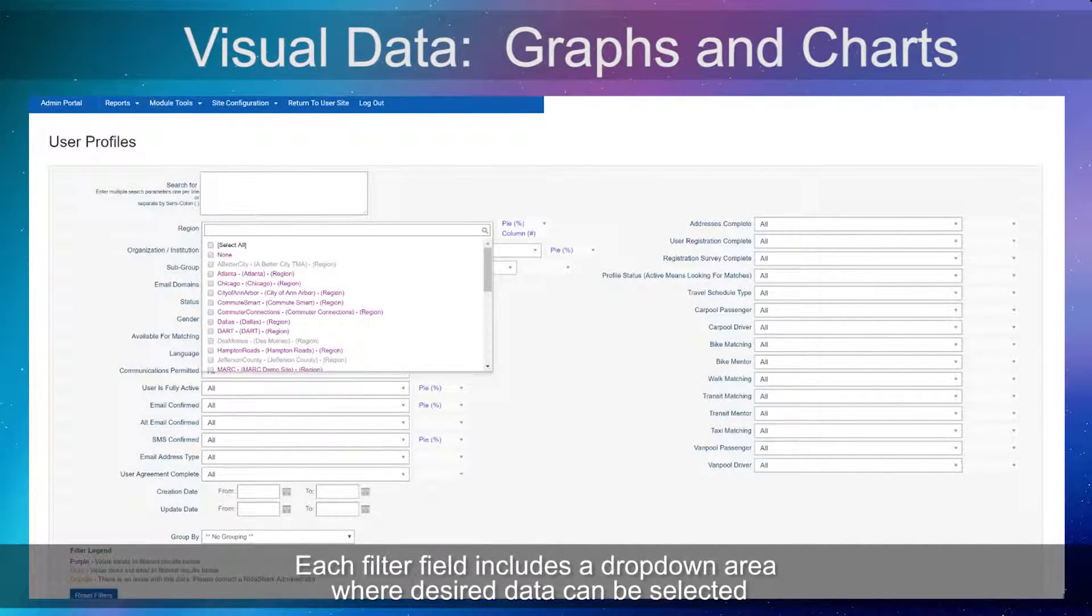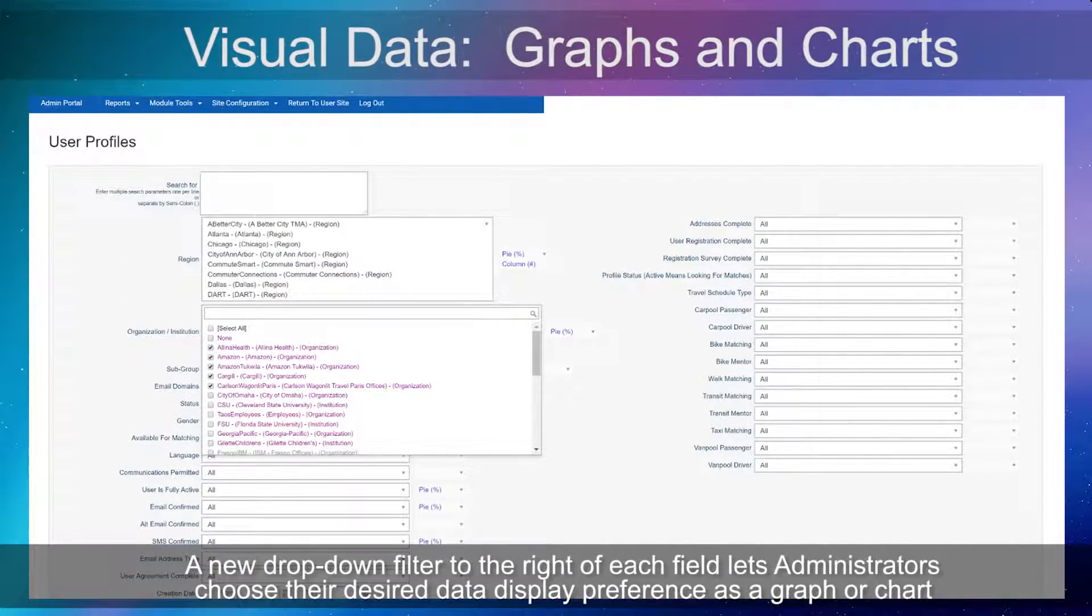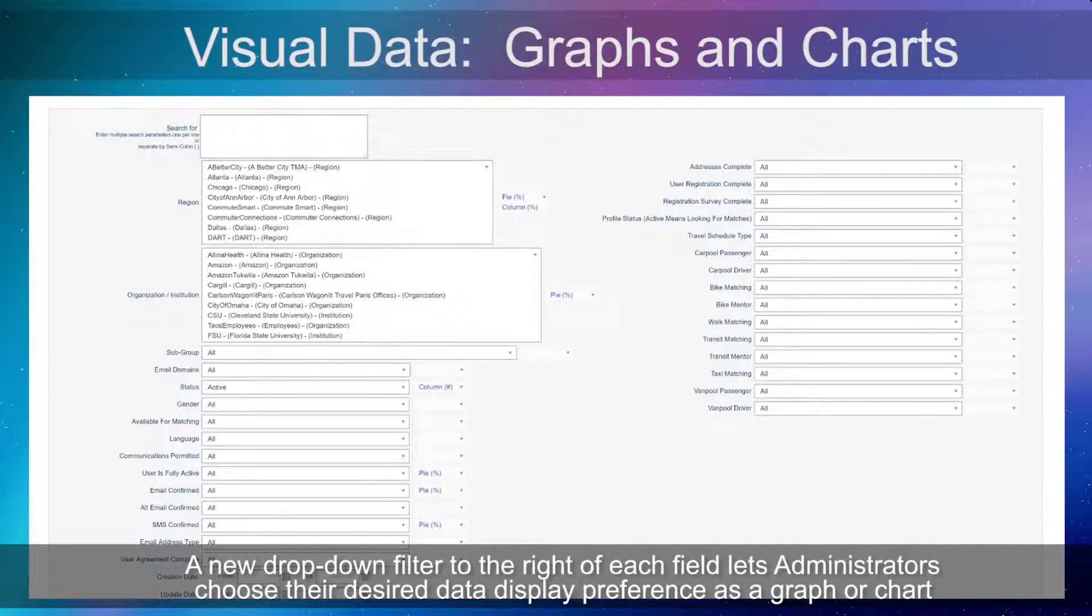Each filter field includes a drop-down area where desired data can be selected. A new drop-down filter to the right of each field lets administrators choose their desired data display preferences as a graph or chart.